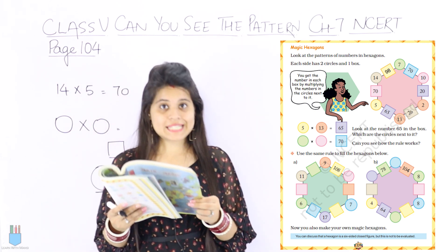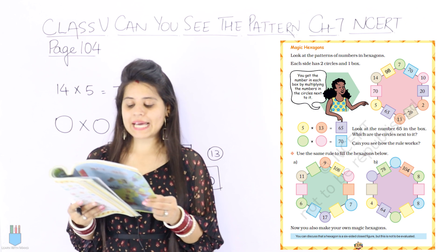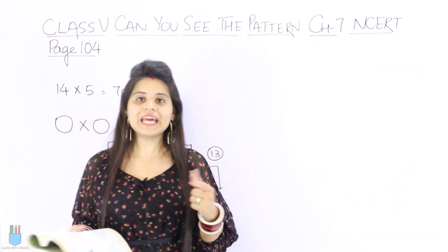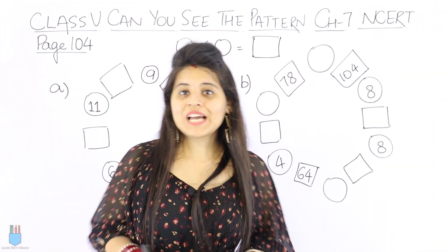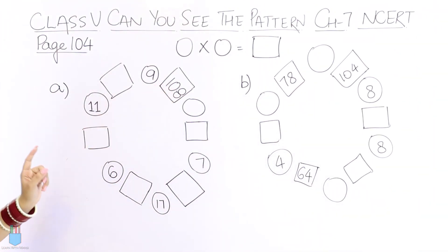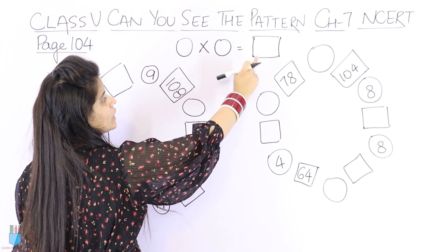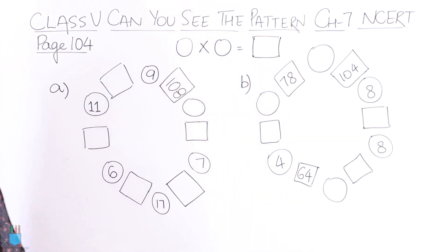So how it works? Multiply two circles and the square between them and fill the number. Next step, use the same rule to fill the hexagon below. So I have given two hexagons and draw it here. So now let's begin. We have given A and B parts and how to follow the rule.